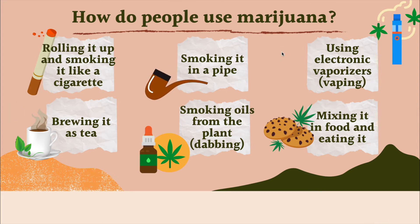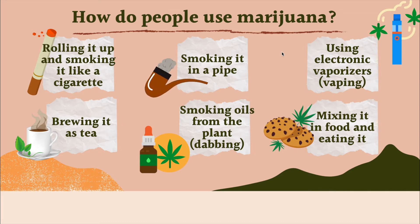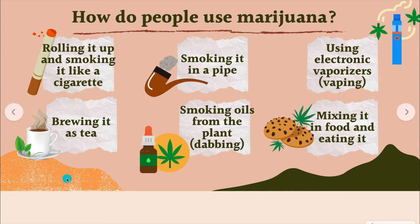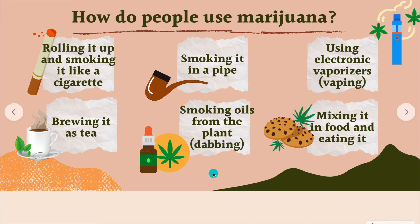Some people put marijuana into vapes. In states where marijuana is legal, you can buy marijuana vapes from the store — like those little cartridges used for things like Juul, but with marijuana. Some people even brew it as tea, putting it in hot water and drinking it.